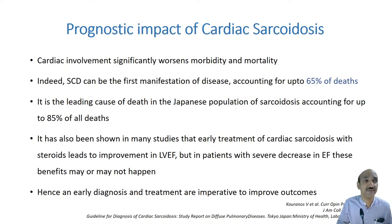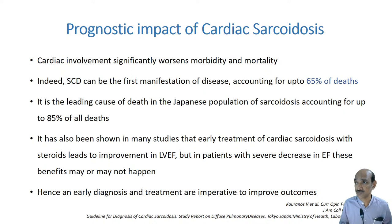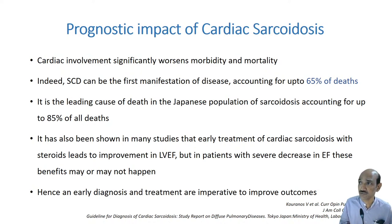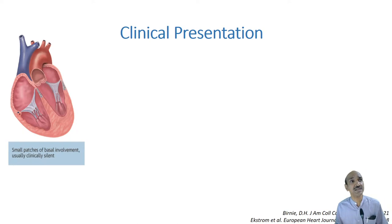Sudden cardiac death may be one of the first manifestations of the disease. In some series, 65% of deaths are sudden cardiac death. In the Japanese population, cardiac death is the leading cause of death in sarcoidosis patients. It has also been shown that treatment of cardiac sarcoidosis with steroids leads to improvement in LV ejection fraction, especially if started early. There is therefore an early need to screen and diagnose cardiac sarcoidosis. Clinical presentation varies — minimal involvement at the basal septum may be clinically silent, but large septum involvement involves all the conduction systems.